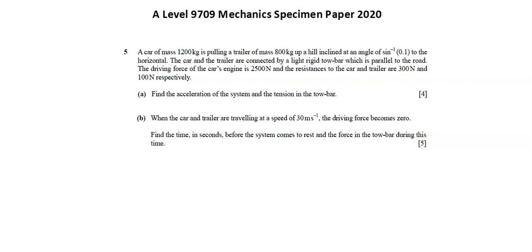Requirement A, find the acceleration of the system and the tension in the tow bar. Requirement B, when the car and trailer are traveling at a speed of 30 meters per second, the driving force becomes zero. Find the time in seconds before the system comes to rest and the force in the tow bar during this time.